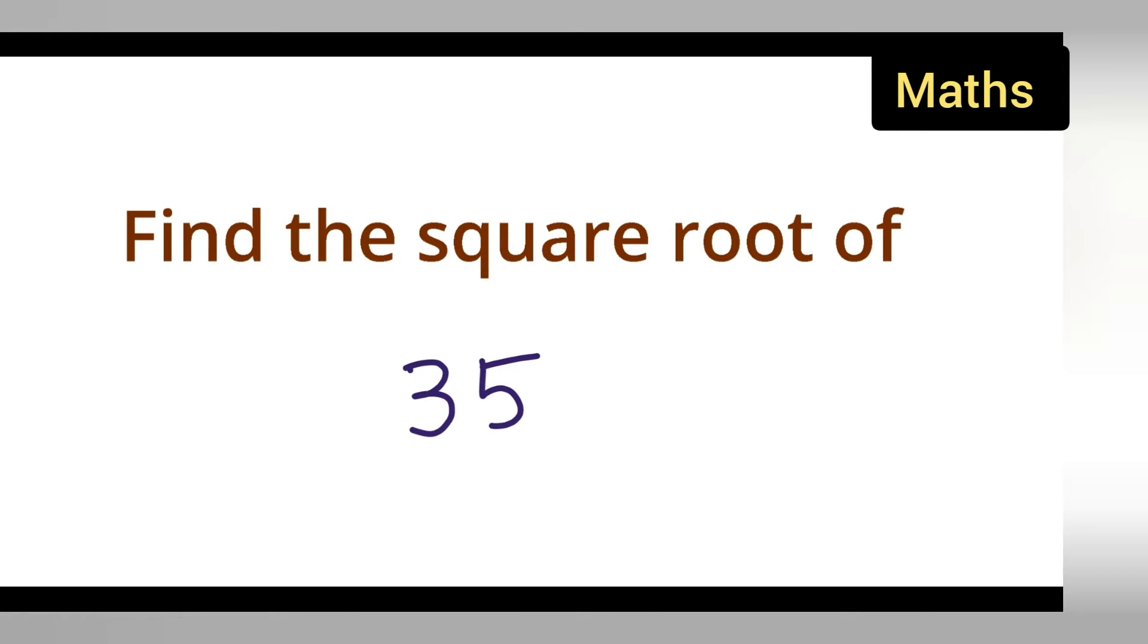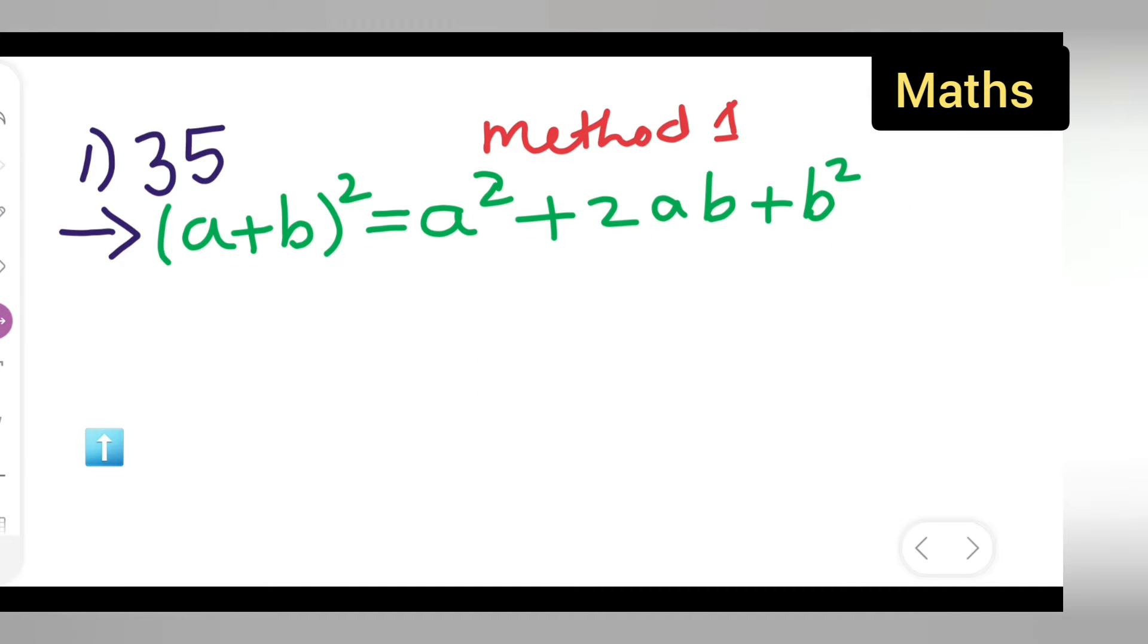So in today's class of mathematics, let us find the square of 35. There are two methods. In method one, I will be using this formula: (a+b)² = a² + 2ab + b². This is a formula.